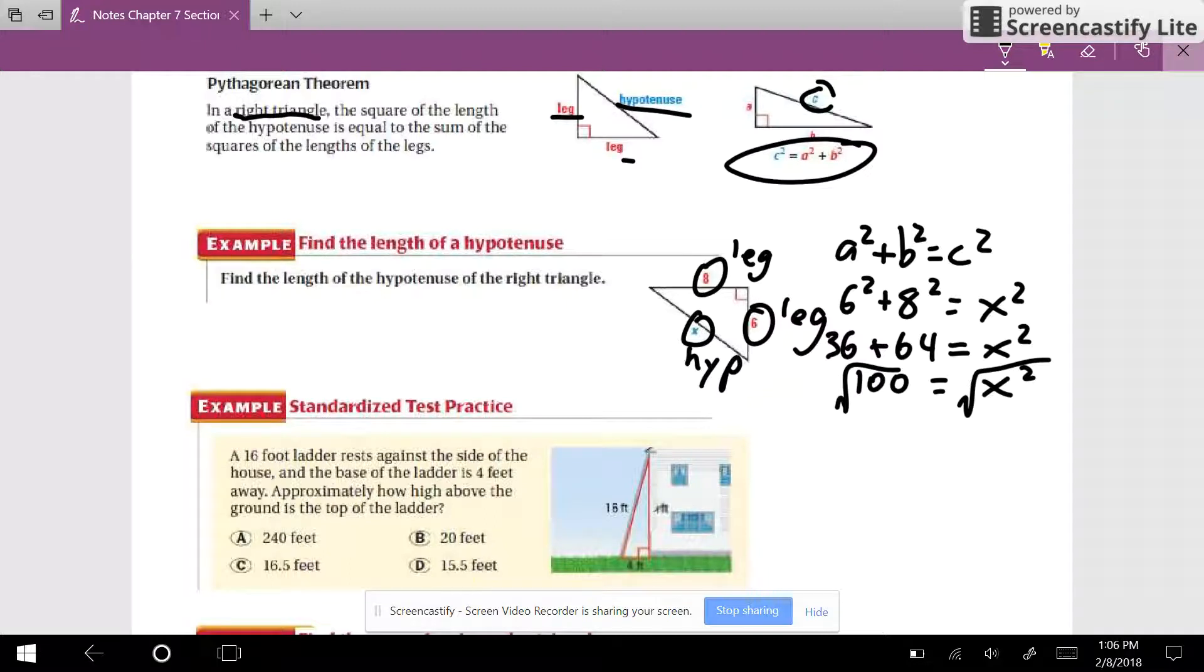So I would have to square root it. Typically when we square root we have to do a plus minus, but we're talking about a length and it can never be negative. So I'm going to ignore the fact that there's normally a plus minus here. And so the square root of 100 is 10. So now I know the answer. The answer to that is 10. So that's the length of the hypotenuse.